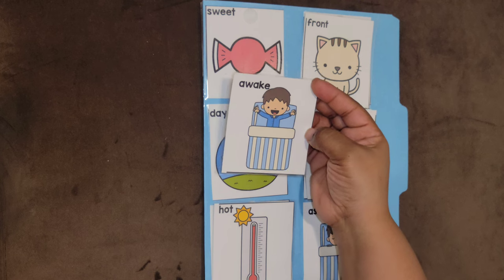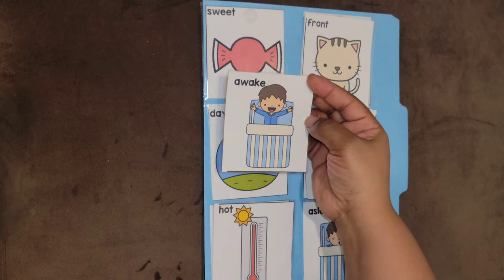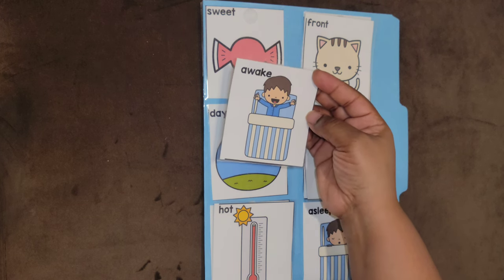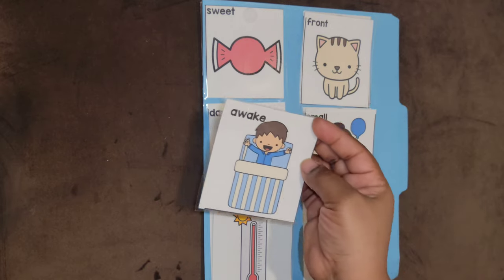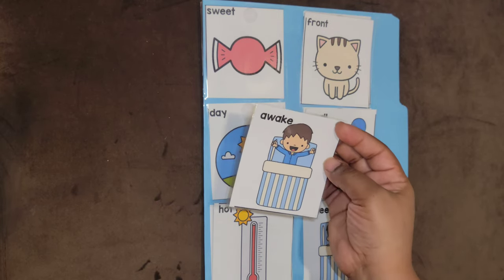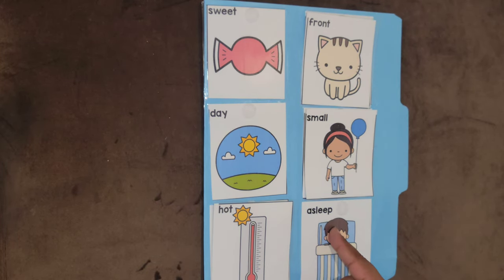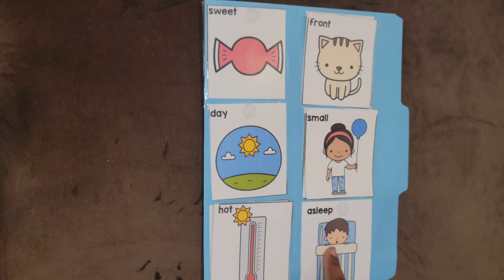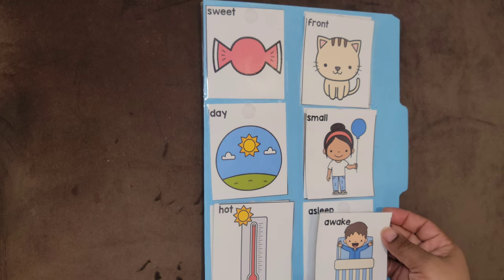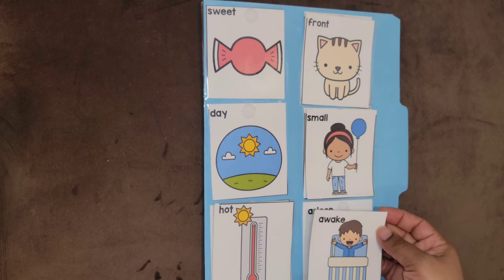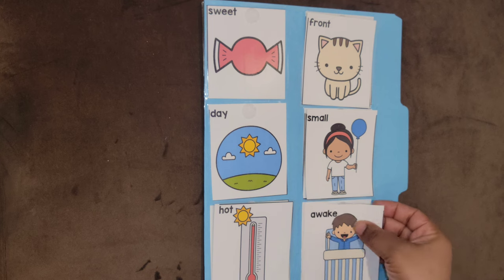Awake! Good morning little boy, time for school. The little boy is awake. The opposite of awake is asleep. Shhh, the little boy is asleep. Say good night little boy. The opposite of asleep is awake.